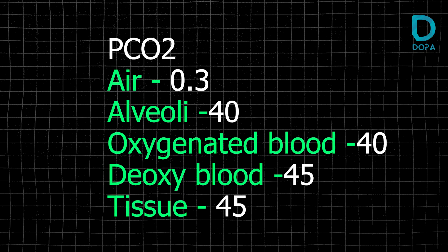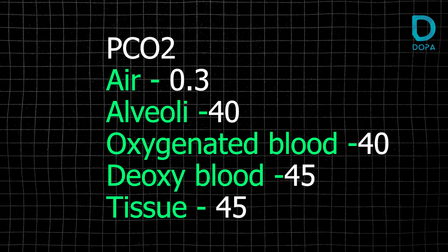What about the partial pressure of carbon dioxide? In the atmosphere, it's only 0.3 mmHg. What about the alveoli? It's 40 mmHg. Oxygenated blood is 40 mmHg. Deoxygenated blood is 45 mmHg.